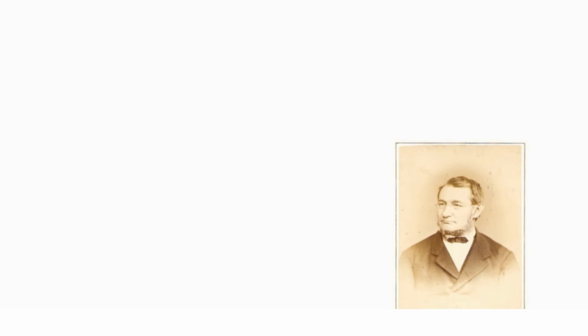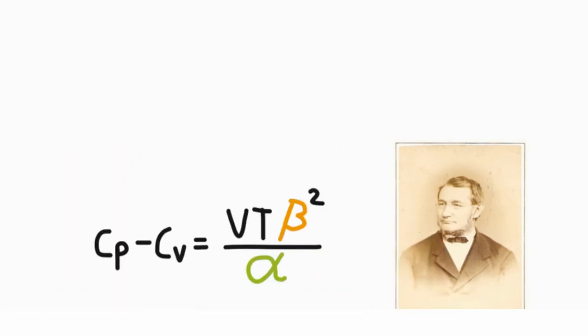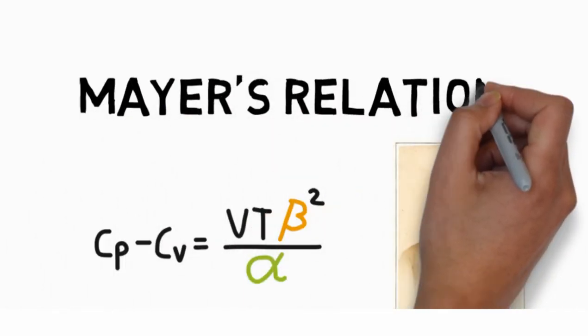The credit of uniting these quantities goes to Julius Robert Mayer. He derived a relation between specific heat at constant pressure and the specific heat at constant volume with coefficient of thermal expansion and isothermal compressibility. This relation in his honor is called the Mayer's relation.